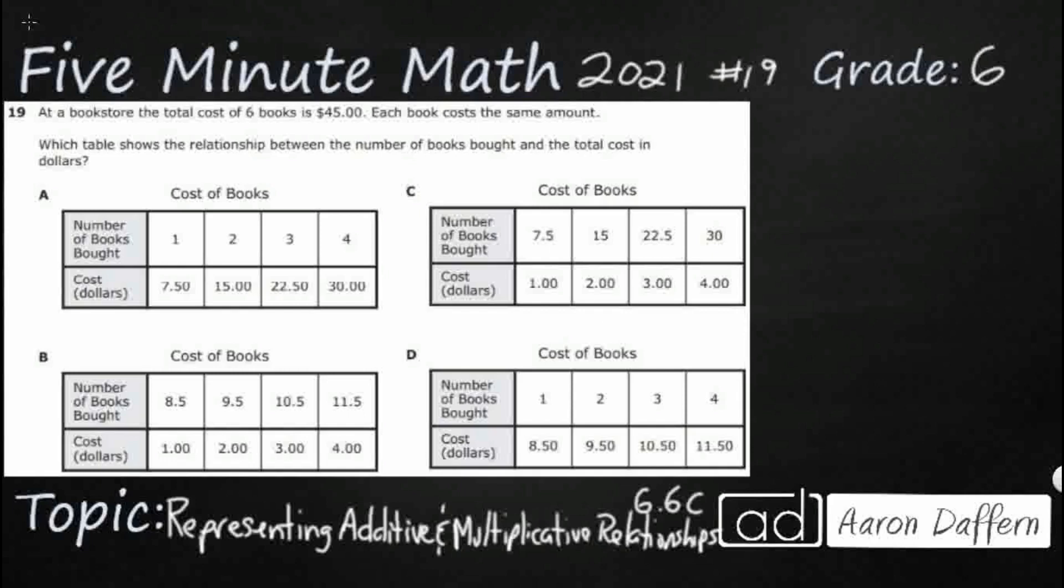So all we have is a little bit of information. We have six books. It's $45 for the total of the six books and each book costs the same amount so we've got equal groups. This should be giving you all kinds of clues when you see that we've got equal groups. We've got the same amount. But what can we do to find the relationship between the number of books and then show that in a table?